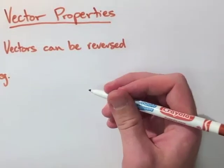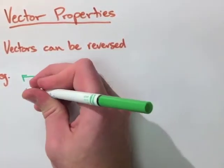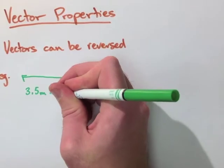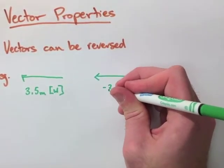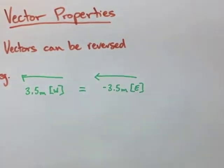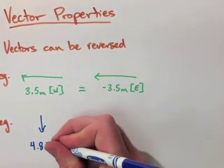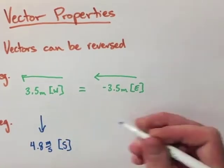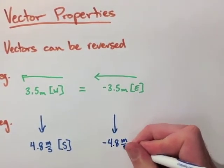Now this means that a vector can be written or said in two different ways. For example, if we have 3.5 meters west, it's the same as negative 3.5 meters east. These are equal to each other. Or if we look at 4.8 meters per second going south, well that's the same as negative 4.8 meters per second going north.